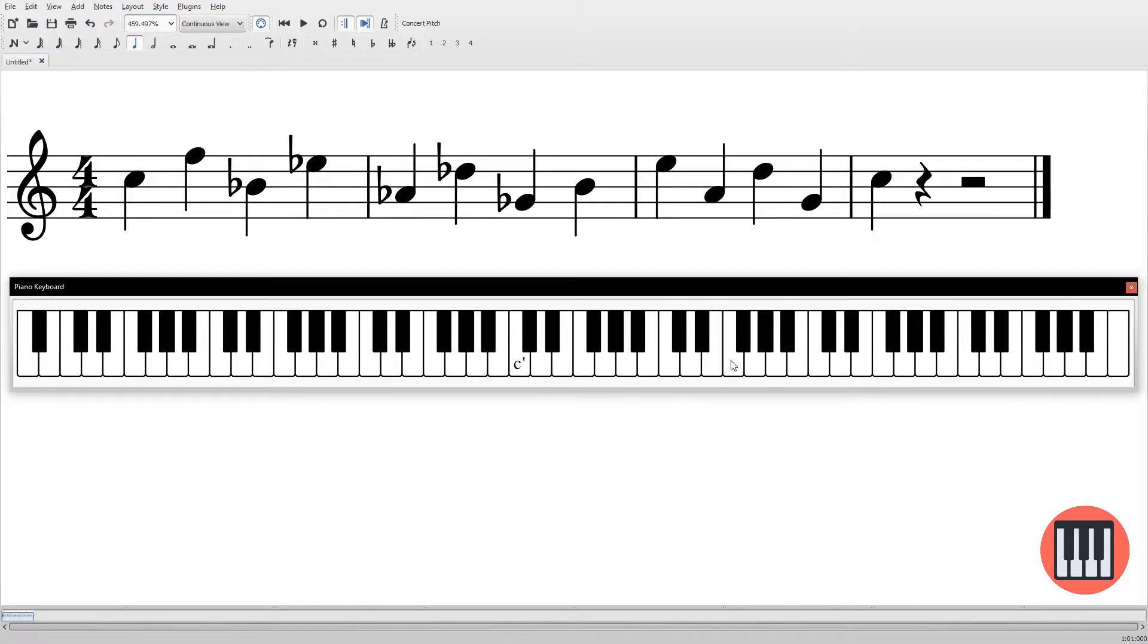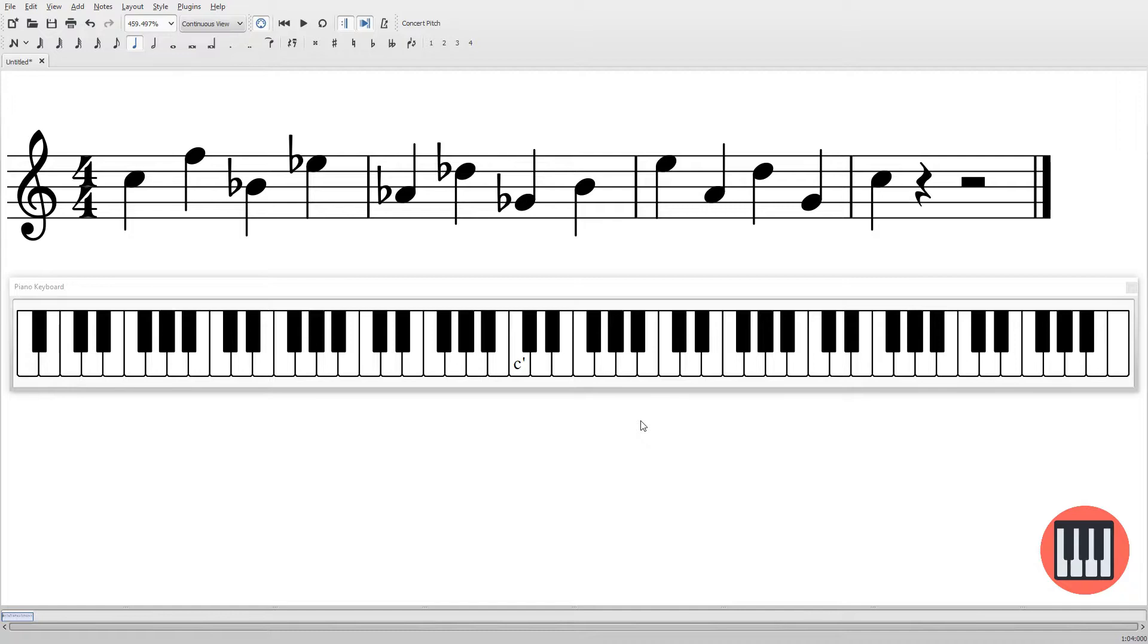So if I was to start at this C here and travel five semitones upwards - one, two, three, four, five - I end up on this F here. If I was to do the same thing again, one, two, three, four, five - B-flat. One, two, three, four, five - E-flat, and so on. As you can see, the first four notes that I have on this example at the top are those notes we just found: C, F, B-flat, E-flat.